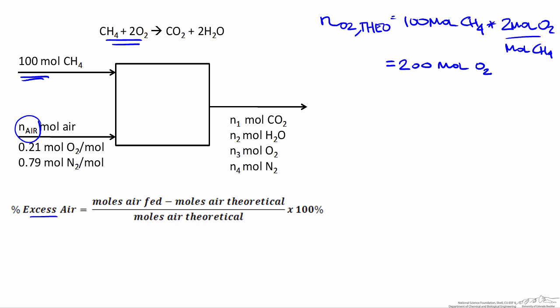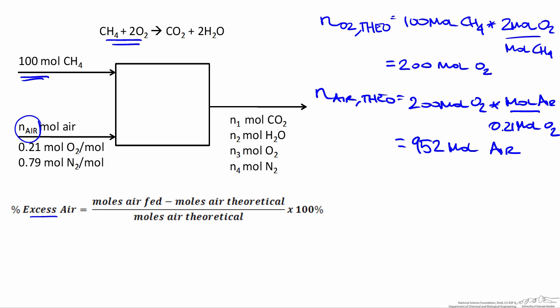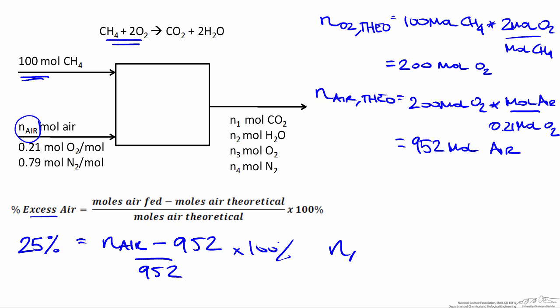However, we're not feeding pure oxygen to the reactor, so we need to find the theoretical amount of air required to supply 200 moles of oxygen. Taking into account that every mole of air has 0.21 moles of oxygen, we multiply by that ratio to get 952 moles of air theoretically needed. With that accounted for, we can use the percent excess equation — knowing air is at 25% excess and the theoretical requirement is 952 moles — to find that the moles of air being fed to the reactor is equal to 1,190 moles.